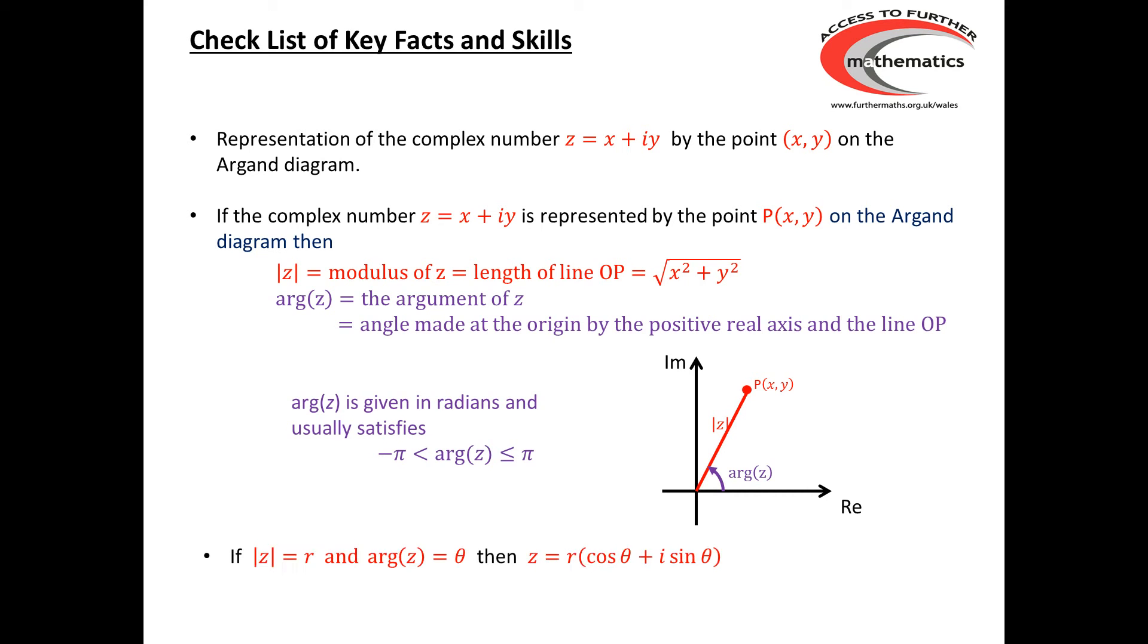Finally, if we know that mod z is equal to r and arg z is equal to θ, then we should also be aware of the fact that z could be written as r times (cos θ plus i sin θ), or if you like, z equals r cos θ plus i times r sin θ. That's what we get if we expand the brackets out.